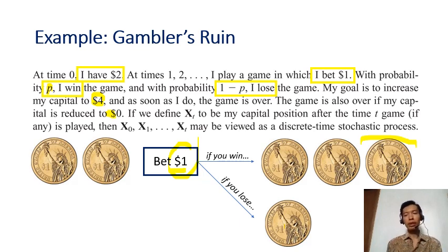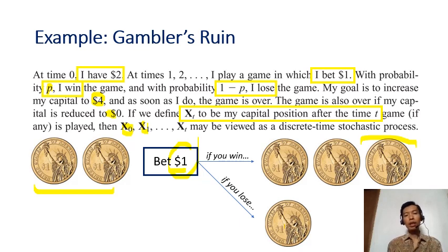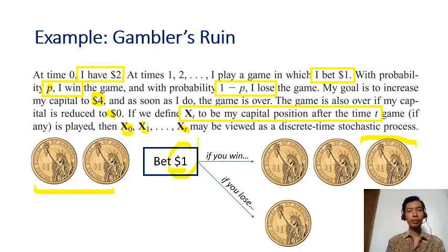The random variable in this case is the amount of money after you play the game at time t. At the beginning, X0 — the money at time zero — is two dollars. After playing one game, the amount of money is X1; after playing twice it's X2; and the money after the t-th game is X(t). There is a relation between the money you have at a particular time and the money at the next time step, which is why we can view this game as a stochastic process — there is an obvious relation between X0, X1, X2, X3, and so on.